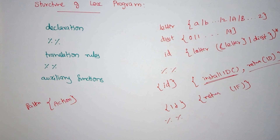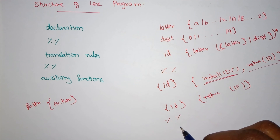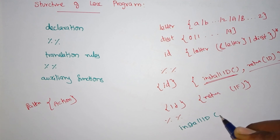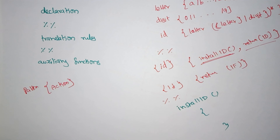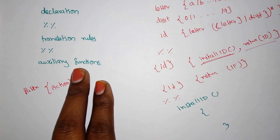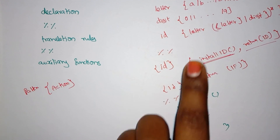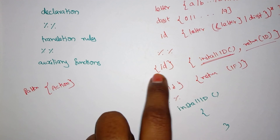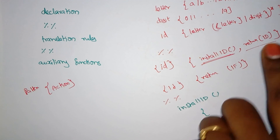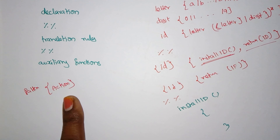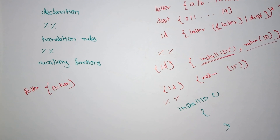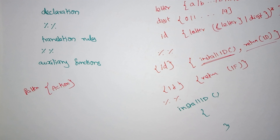The 'install_id' function that was called in the translation rule has its full definition written in the auxiliary functions section. So this is the structure of your LEX program: the declaration portion contains all the rules; the translation rules define what action to perform for each pattern; and the auxiliary functions contain the full definitions of all helper functions used. This is how a LEX program actually works.